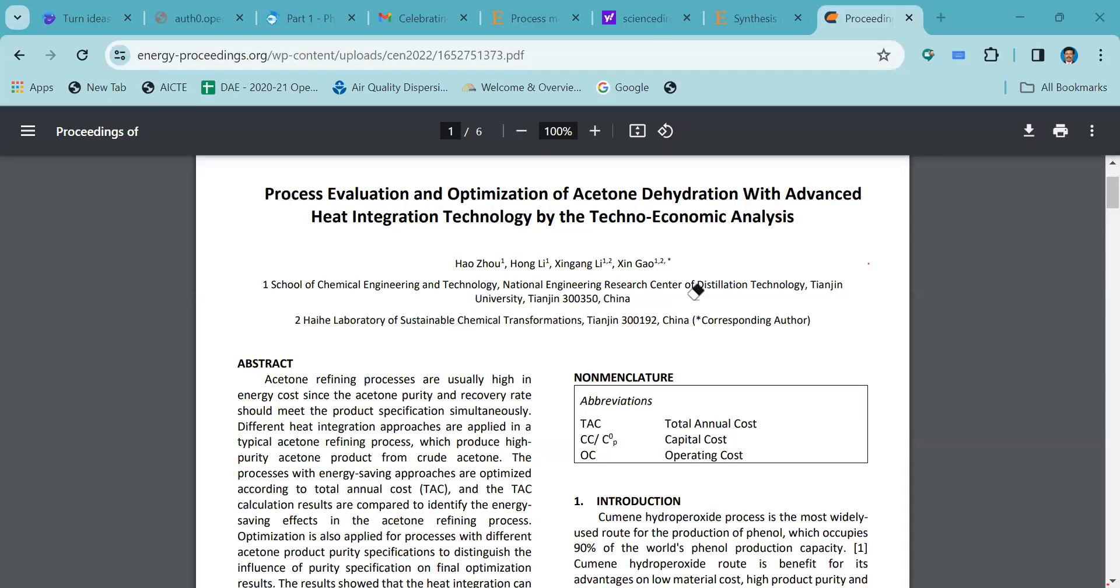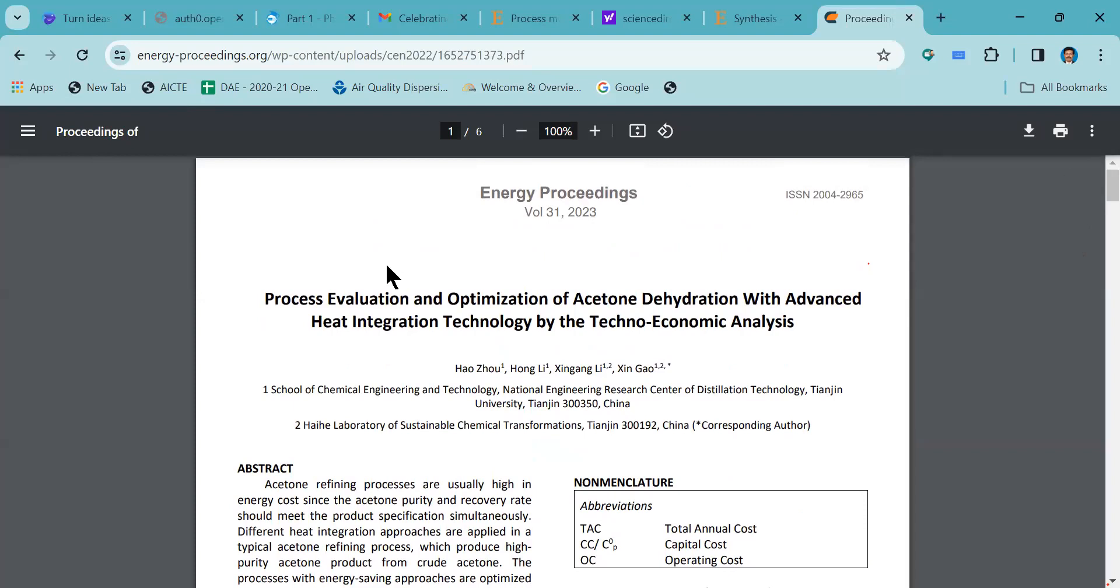Welcome to this small session. Today I am going to discuss how to go through an article that is published in a journal or as proceedings. This particular article is about Energy Proceedings, published in volume 31 in the year 2023.